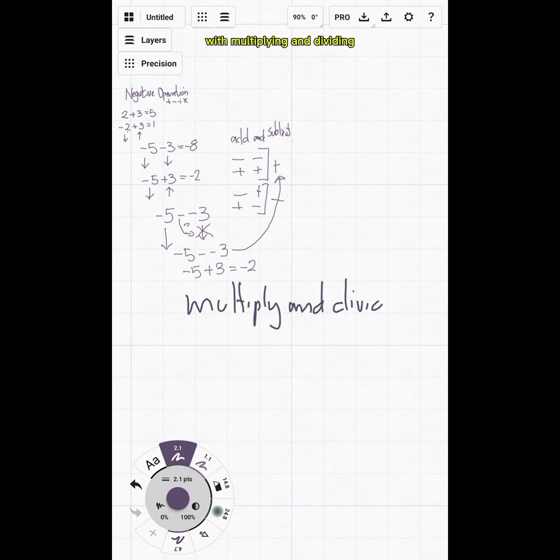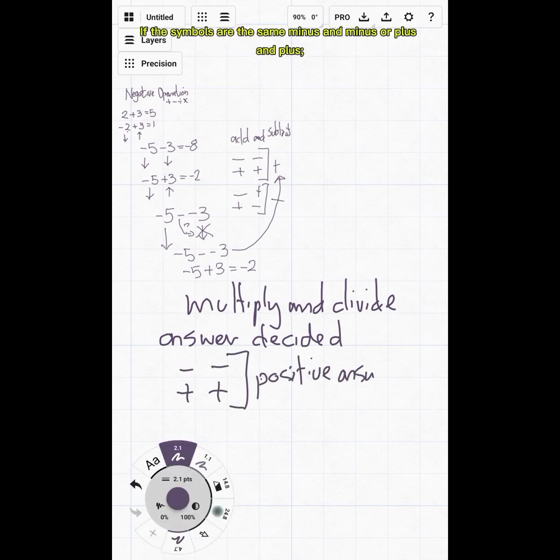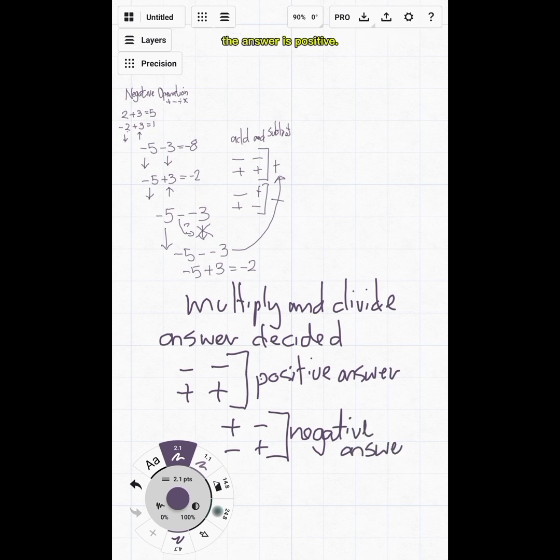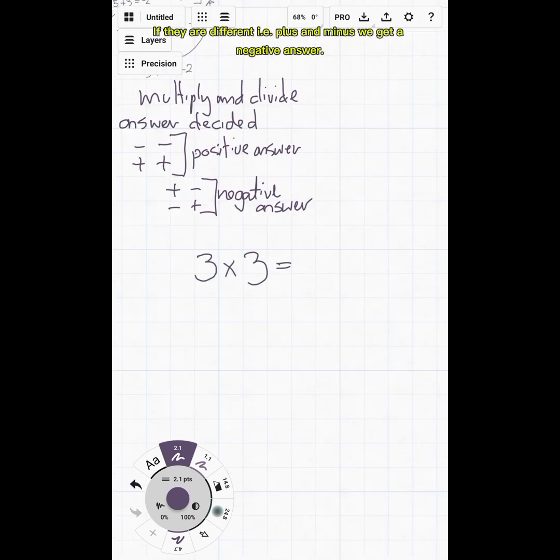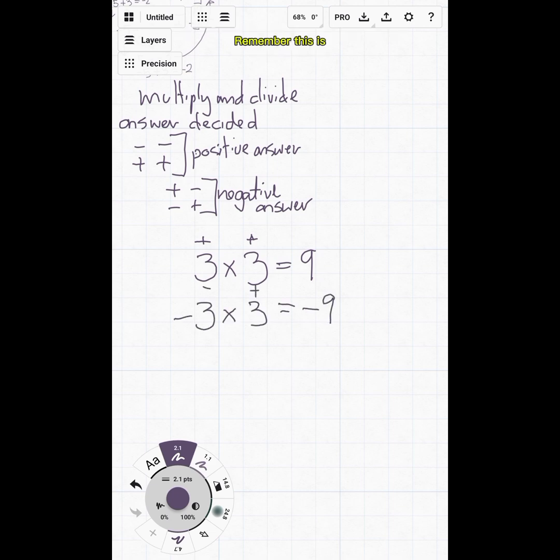With multiplying and dividing, there is a similar rule which predetermines the answer's negative or positive status. If the symbols are the same (minus and minus, or plus and plus), the answer is positive. If they are different (i.e., plus and minus), we get a negative answer, as we see here. Remember, this is only for multiplying and dividing with negatives, because that's where people get confused.